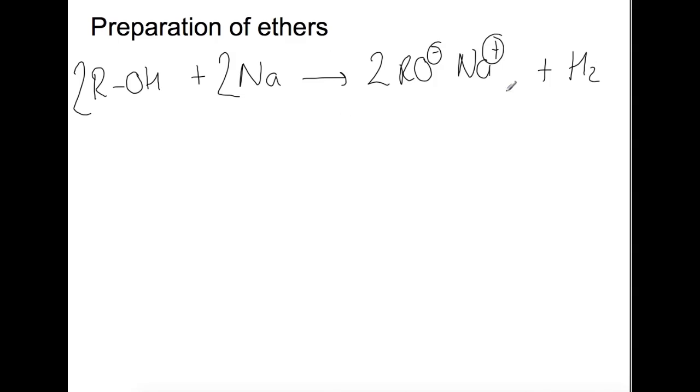You then take your alkoxide and you react it with a haloalkane to produce the other half of your ether. Your alkoxide replaces the X from the haloalkane to allow you to produce your ether with the two branches. Your R and your R dash can be the same or they can be different. If they're different you have to work out which one you want to use in each reagent.